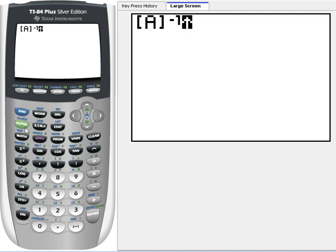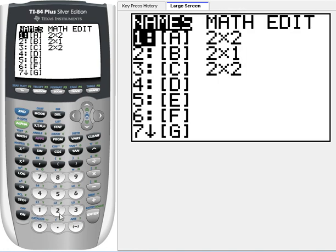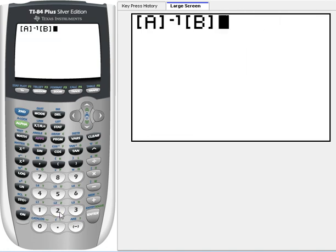Then we want to do B, so second matrix, and then click 2, and that puts B there. When I click enter, it gives me a 2x1 matrix, as you can see right here, two rows, one column. We get [2, 2], which means that x equals 2 and y equals 2.